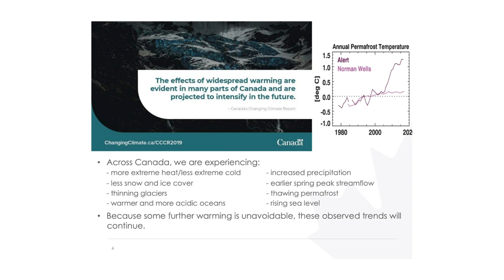As the climate warms, there are many implications. Temperature increase has other effects on the physical climate system. One is temperature in the soil. Much of Canada has permafrost — permanently frozen ground, frozen year-round — and we have been measuring the temperature of that permafrost for a long time in various boreholes. This is part of the observational program run by Natural Resources Canada. As air temperature changes, the soil temperature changes as well.